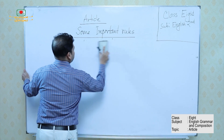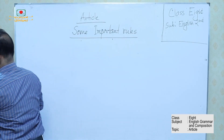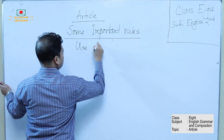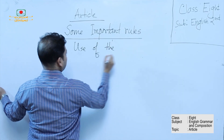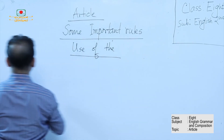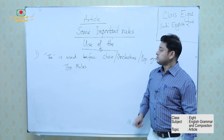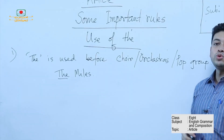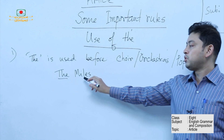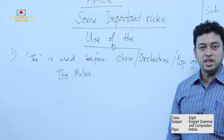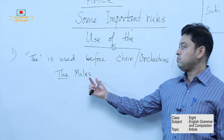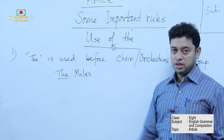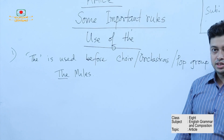Now, some important rules on the use of THE. THE is used before choirs, orchestras, or pop groups. For example, Miles is a very popular band in Bangladesh. Before this kind of name, we use THE — the Miles, the LRB, the Nagar Baul.